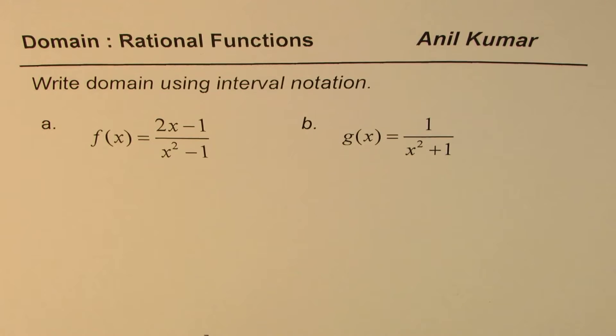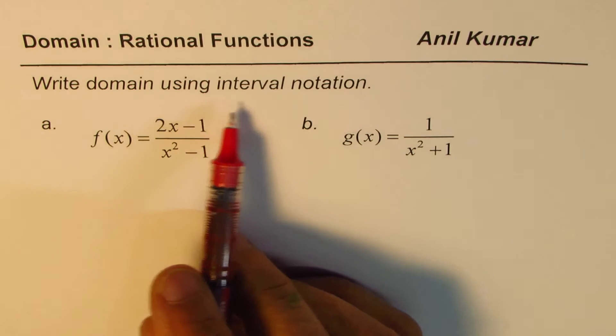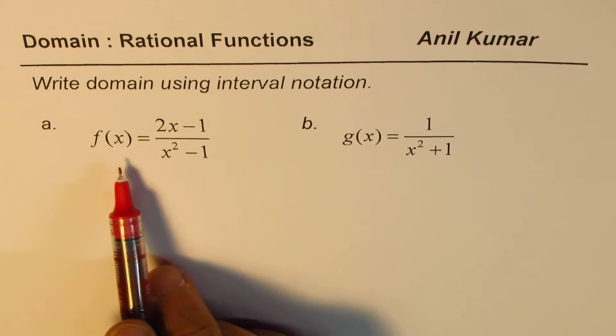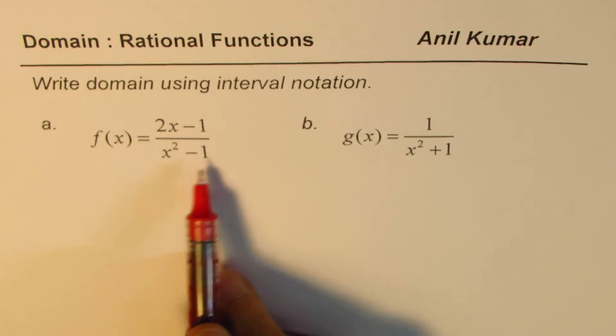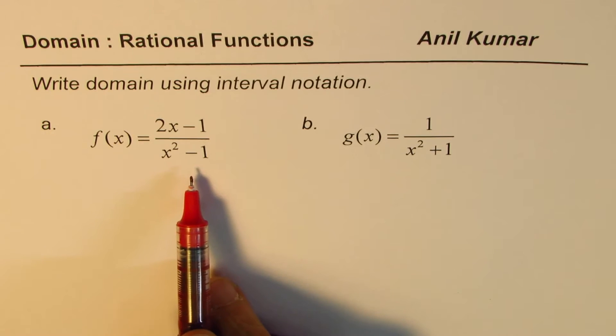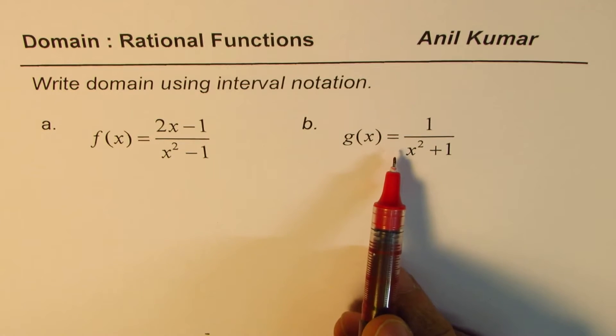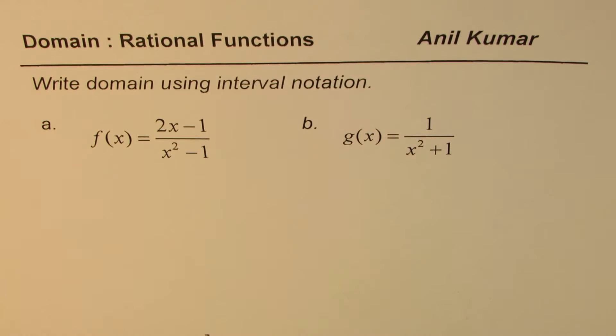I'm Anil Kumar and in this video we'll try to understand how to write domain for rational functions. The question is, write domain using interval notation. f of x equals 2x minus 1 divided by x square minus 1 and g of x is equal to 1 over x square plus 1.